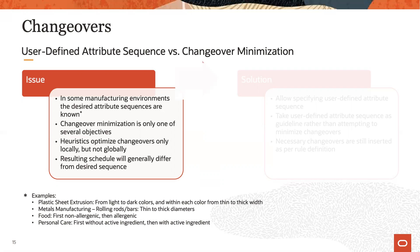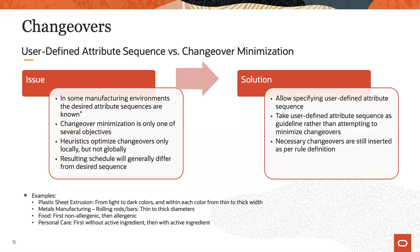Since in such environments a good and desirable attribute sequence is often known, the solution is to allow defining such an attribute sequence by resource and have the ability to make use of the user-defined attribute sequence.